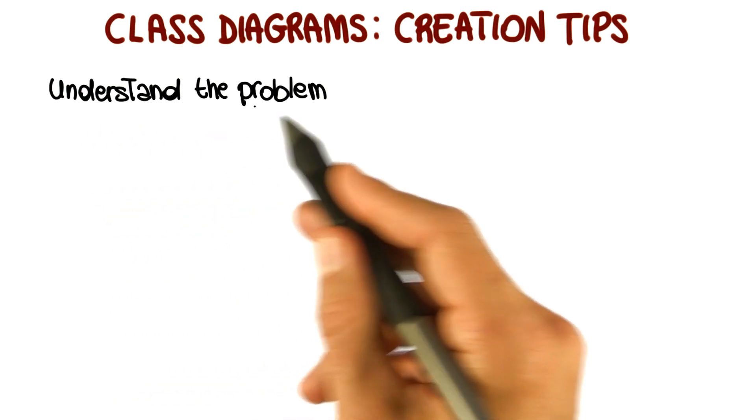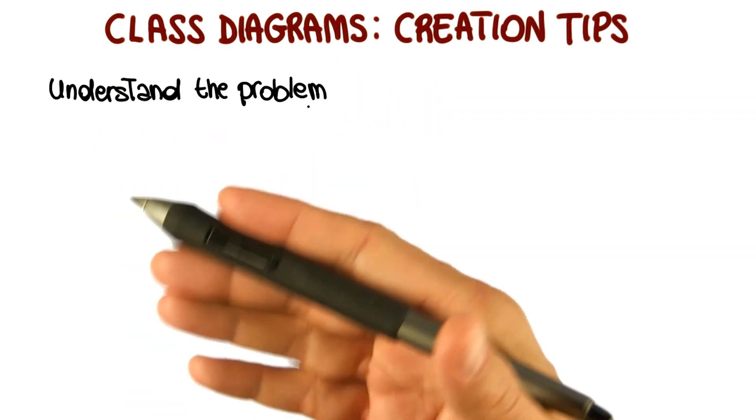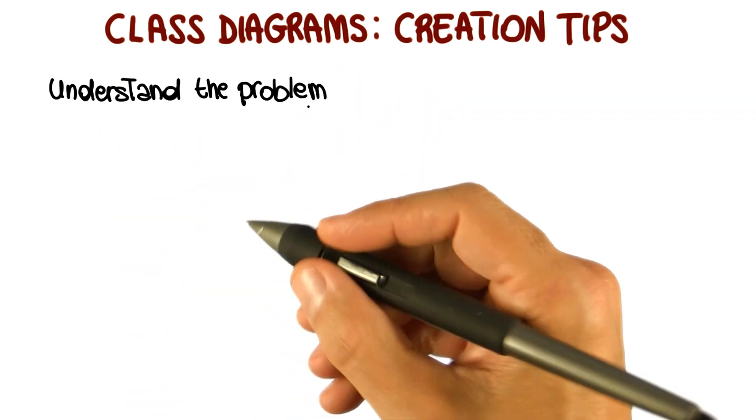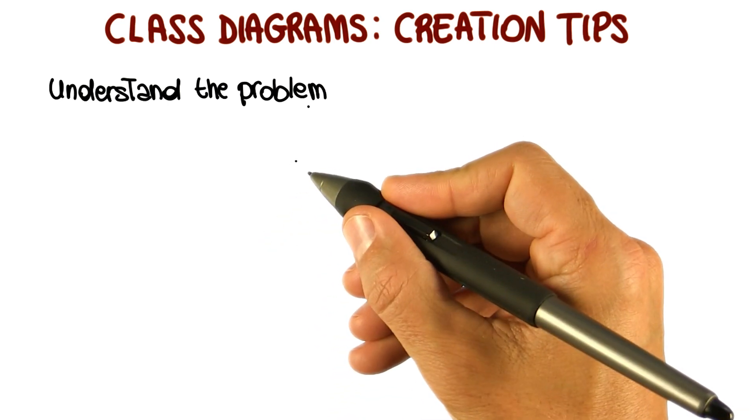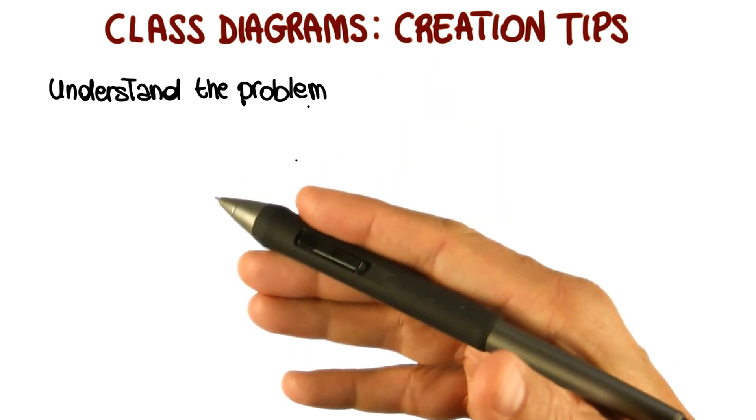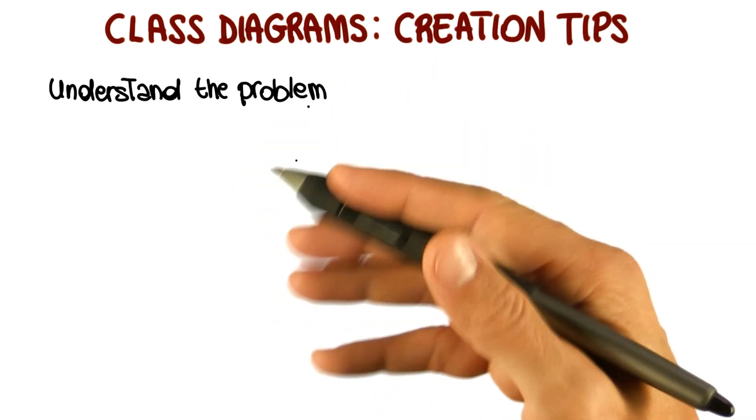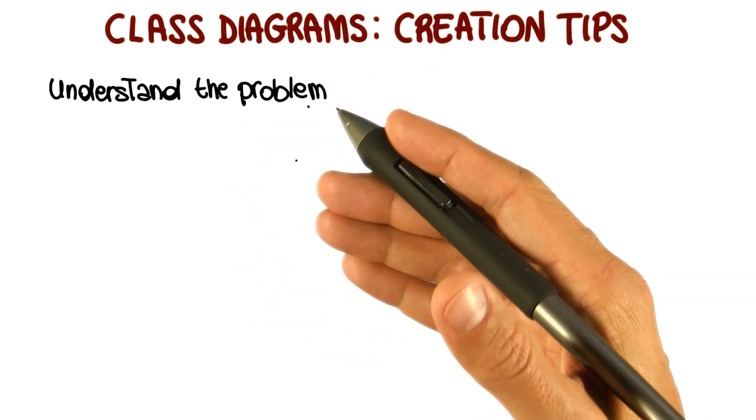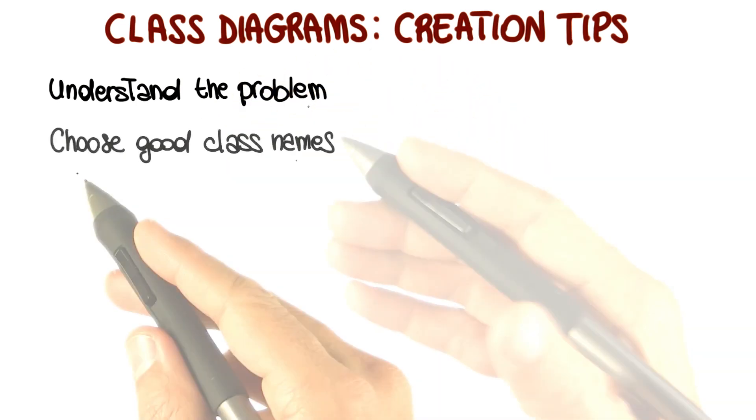So the first tip is to understand the problem. Take the time to look at the description of the system that you have to build to make sure that you understand the domain, that you understand what you're supposed to build. Because that is going to save you time later. It's going to help you identify from the beginning a more relevant set of entities in the description of the system.